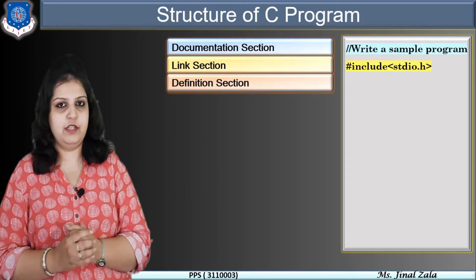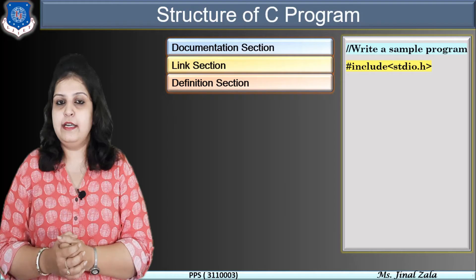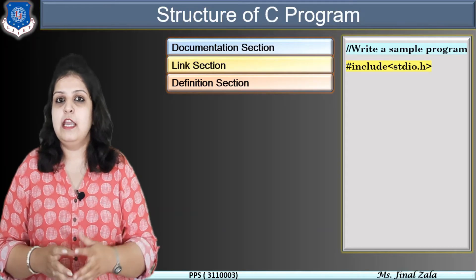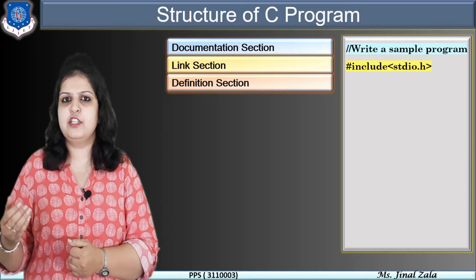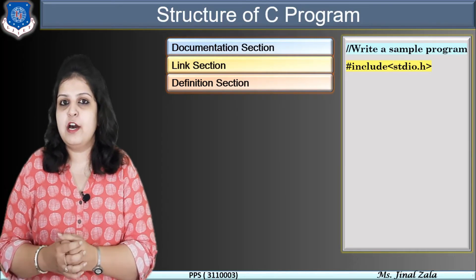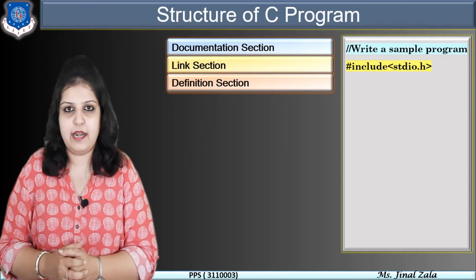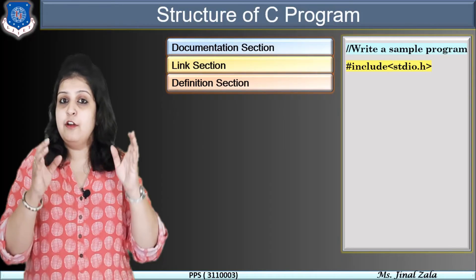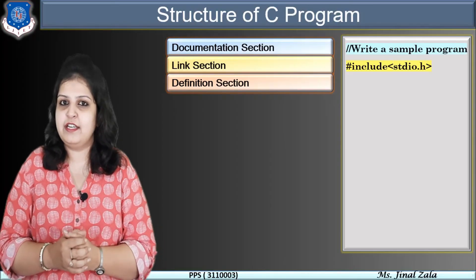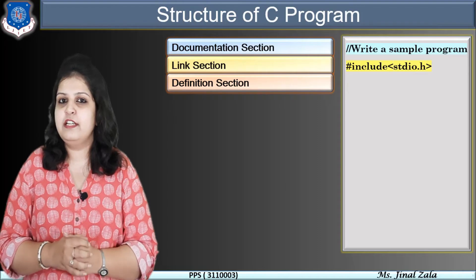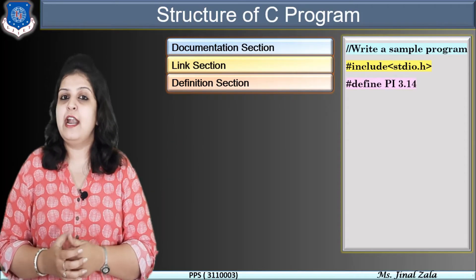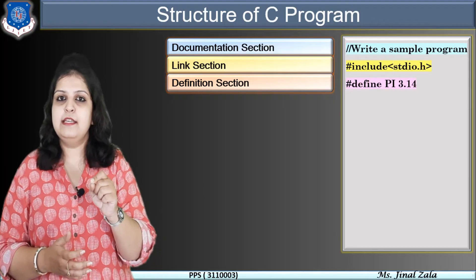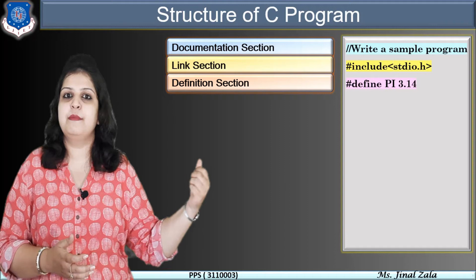The next section is the definition section — it is an optional part. The definition section is used to define all symbolic constants. For example, for the area of a circle, the formula is pi r squared, and pi has a fixed value of 3.14 that never changes throughout the program — it is a constant. This type of constant value can be defined in the definition section. For example: #define PI 3.14.